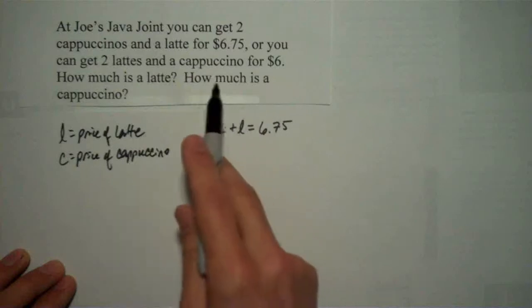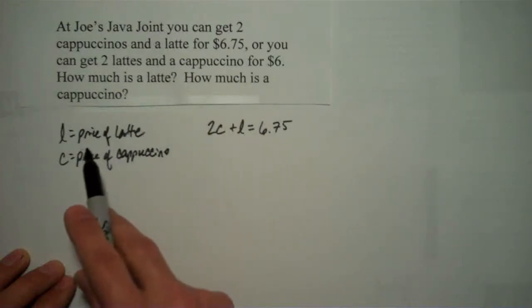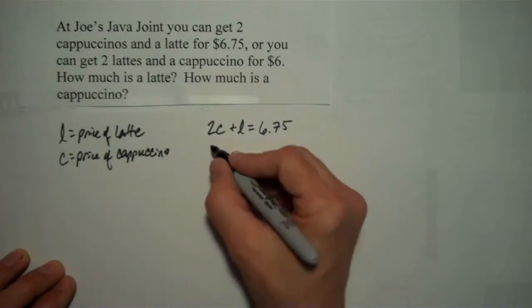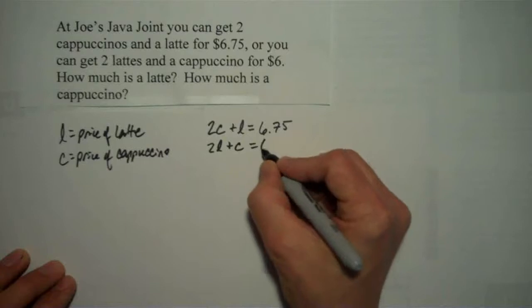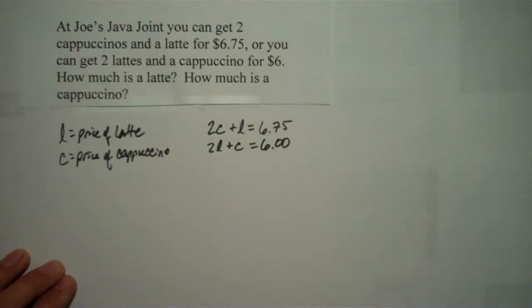How much is a latte? Oh, I'm sorry. The next one says you can get two lattes and a cappuccino for $6.00. Okay, so that means 2L plus C equals 6. Okay, now we have two strategies that we frequently use to solve these problems, to solve linear systems problems. One is substitution, one is elimination.